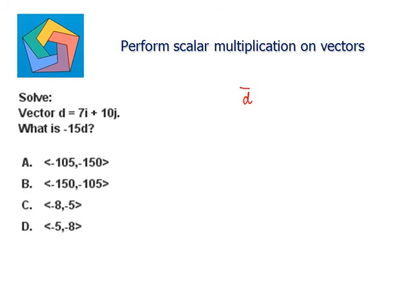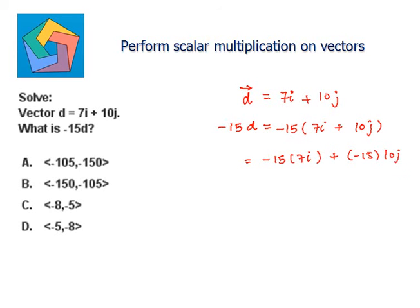So we have vector d equal to 7i plus 10j. Negative 15d will be equal to negative 15 times 7i plus negative 15 times 10j. Negative 15 times 7 is negative 105i, and negative 15 times 10 is negative 150j. This can be written in component form as negative 105 comma negative 150, which is the answer in part A.